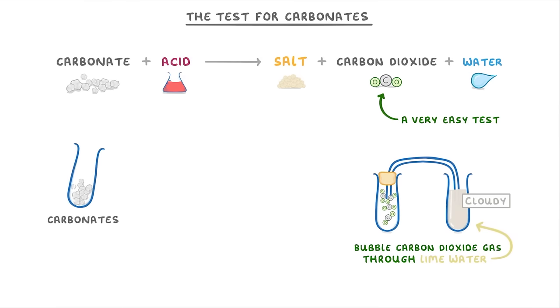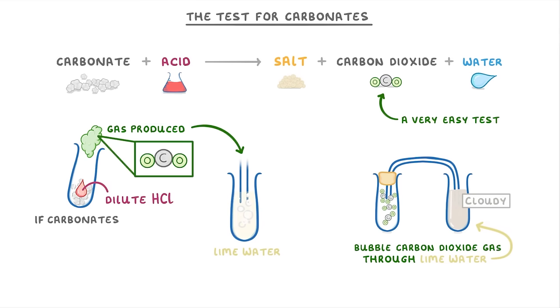So to test for carbonates, all we do is add some dilute hydrochloric acid to our test sample, and then take any gas that's produced and run it through some lime water. Because if carbonates were present in the original sample, then carbon dioxide will have been produced, and so it will turn the lime water cloudy. If the lime water goes cloudy, then that's a positive test result, and it means that carbonates were present.